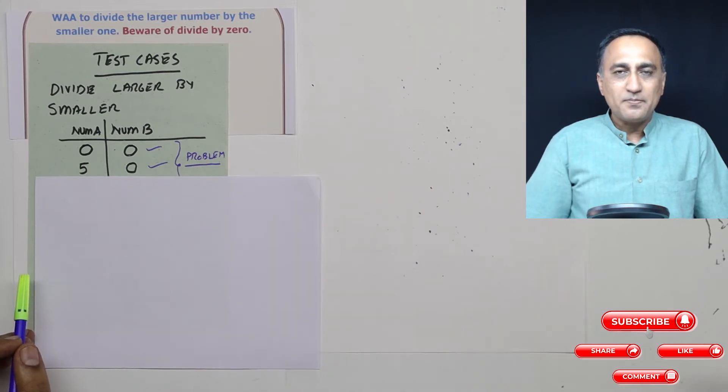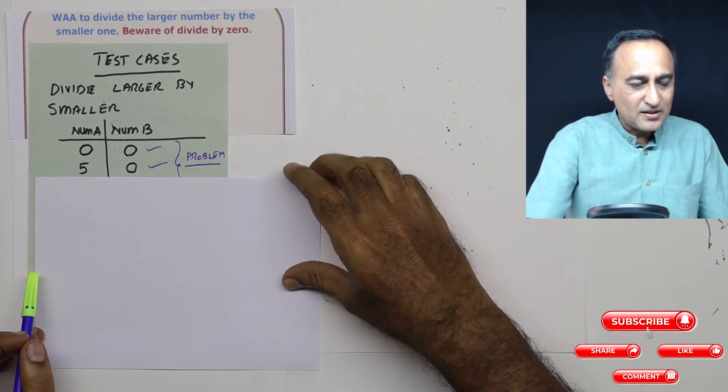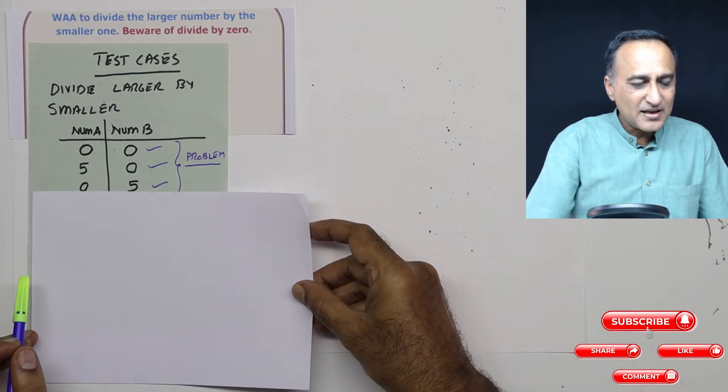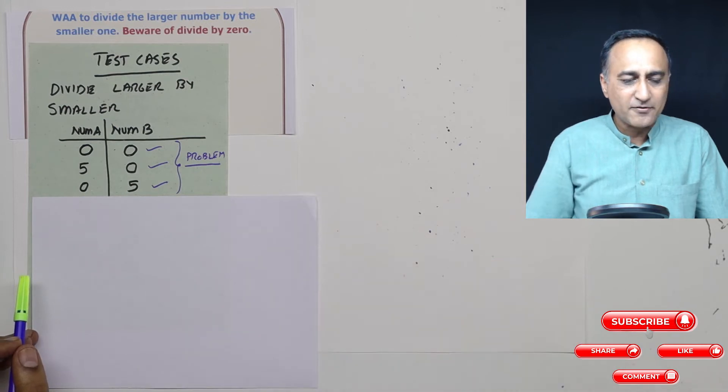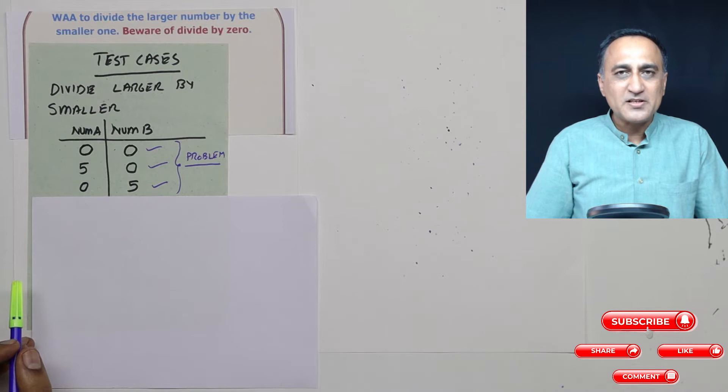This is also a problem because 5 is greater than 0. But I cannot divide a positive number by 0 because the answer to that is also unknown. Then what about the next? If number A is 0 and number B is 5, this is also a problem because 5 by 0 again does not have any answers in maths.